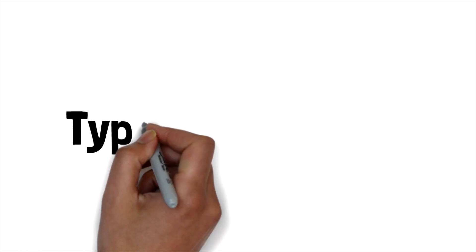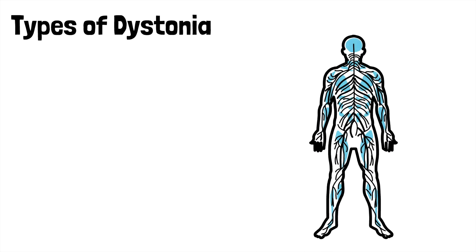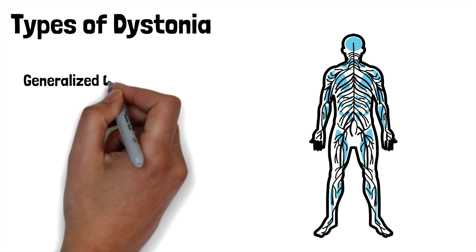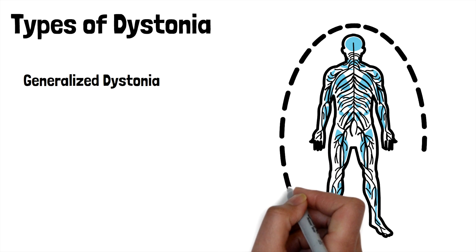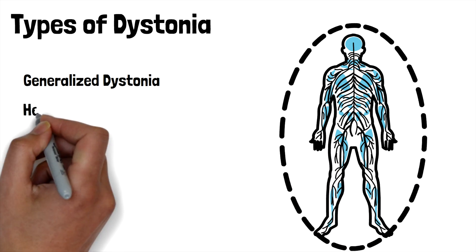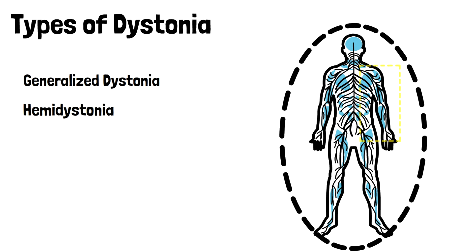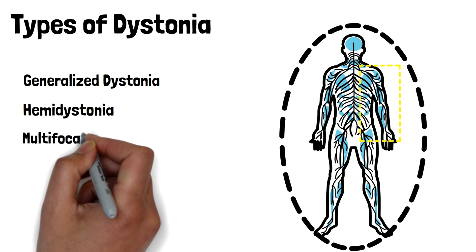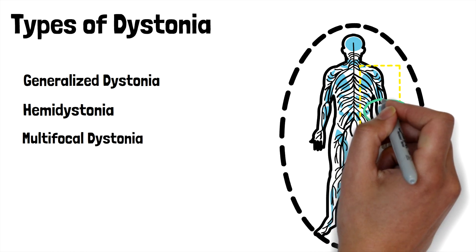Types of dystonia. Dystonia can be classified into five main categories. The first type is generalized dystonia, when the disorder affects most or all of the body. The second is hemi dystonia, where the effects are localized to one half of the body, such as the right side. Next, we have multifocal dystonia. This affects two or more distant or unrelated body parts, such as a leg and an arm.